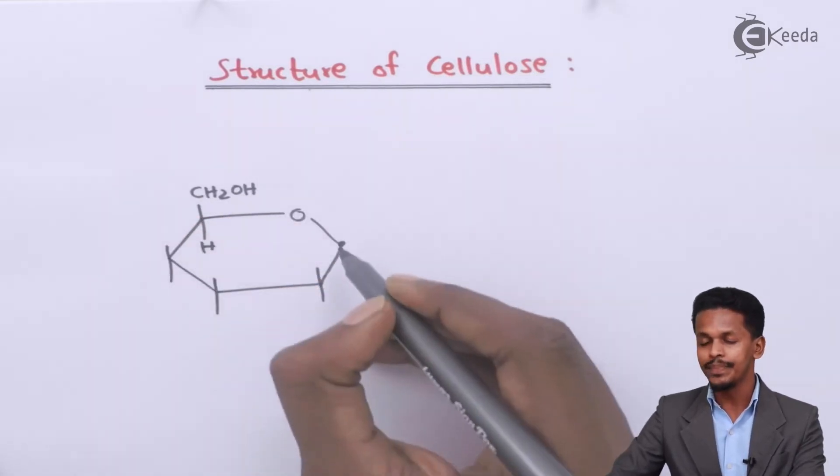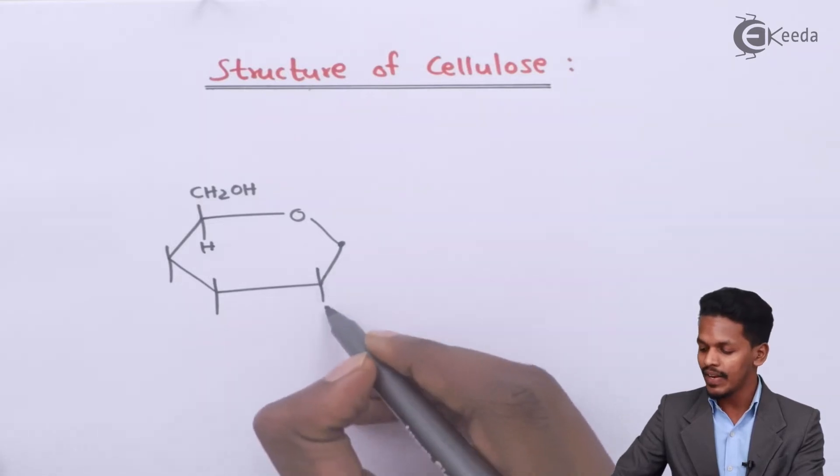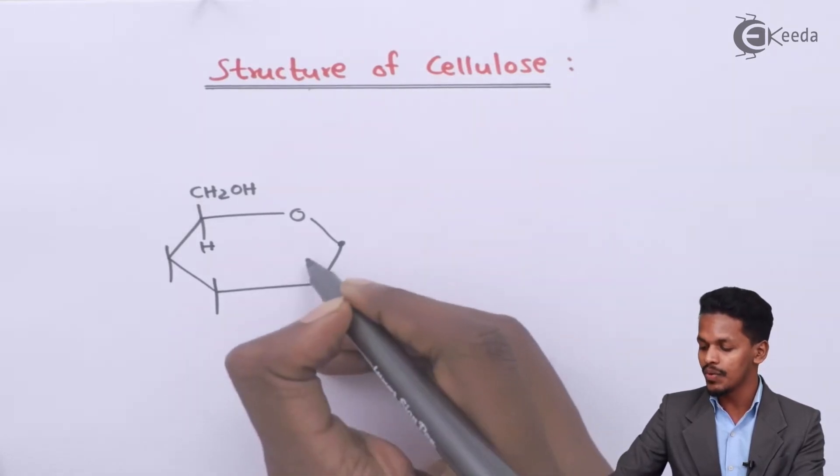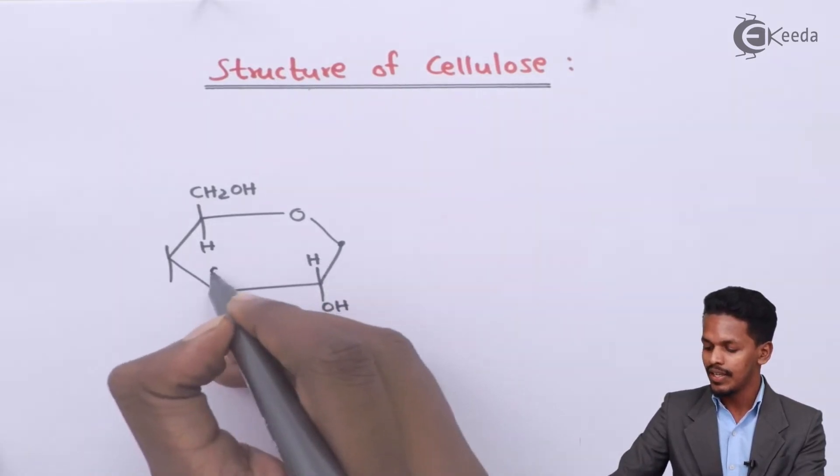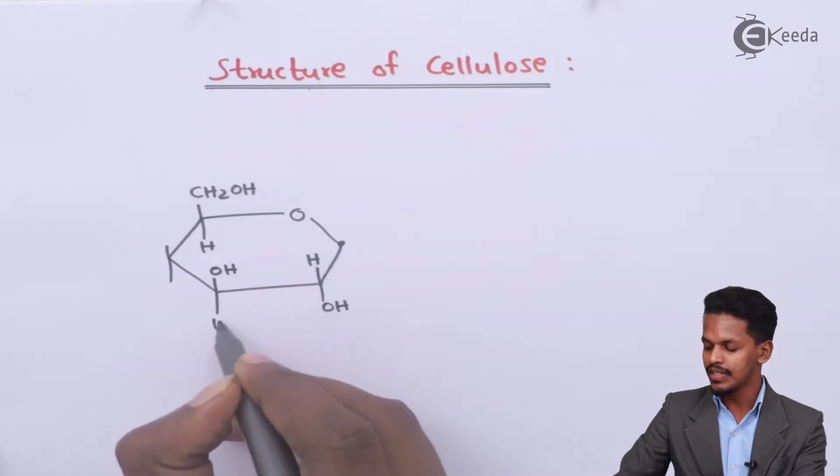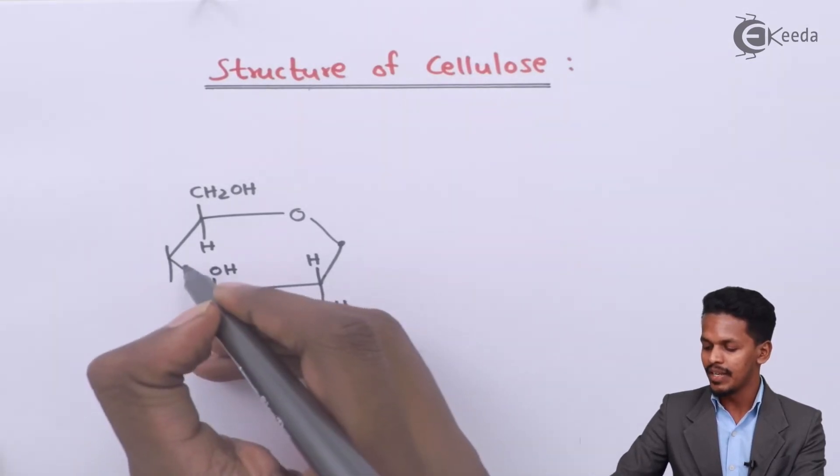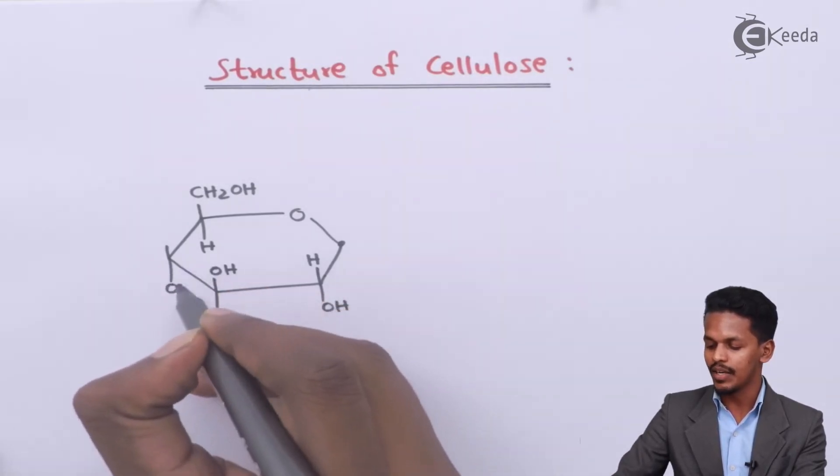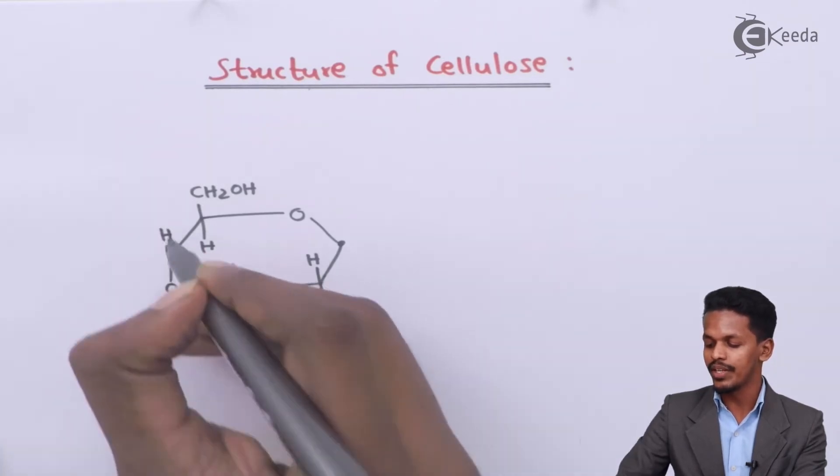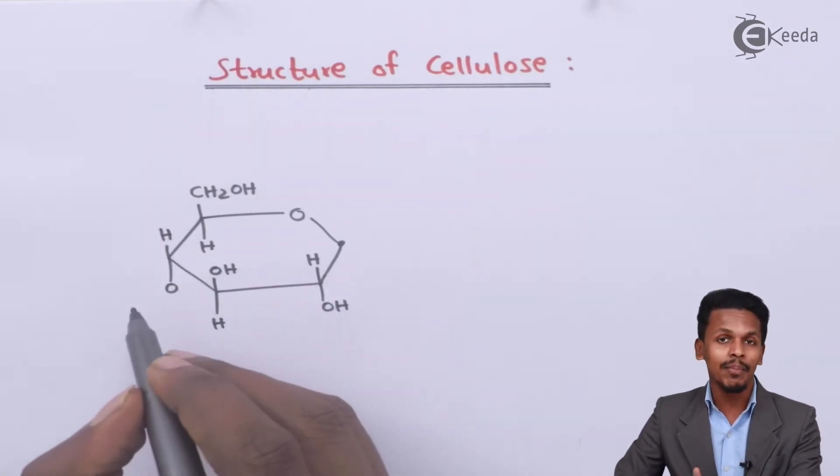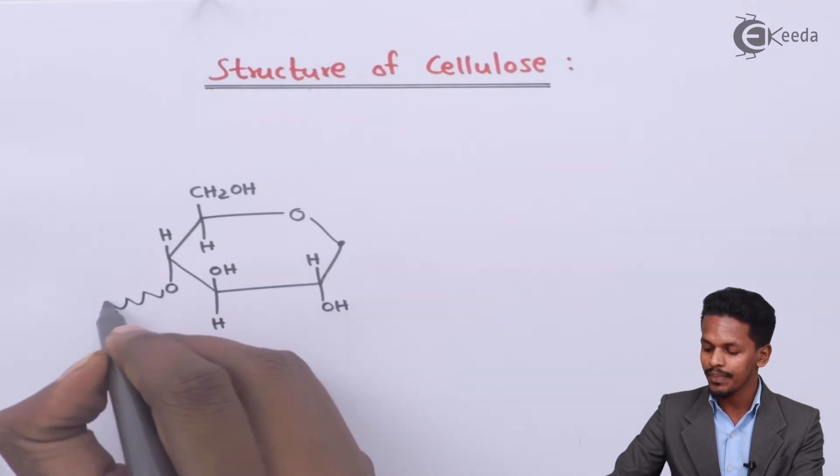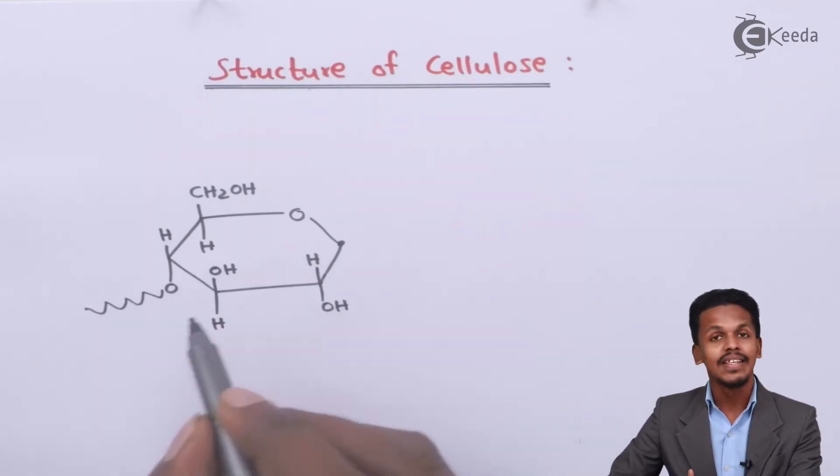And talking about the second carbon atom, we can find that the OH is towards the downward side. This is H. Here there is OH. Here there is H. And similarly there will be oxygen atom over here and hydrogen atom over here. Since I am saying that it is a polymer, this is what the polymer of cellulose is.